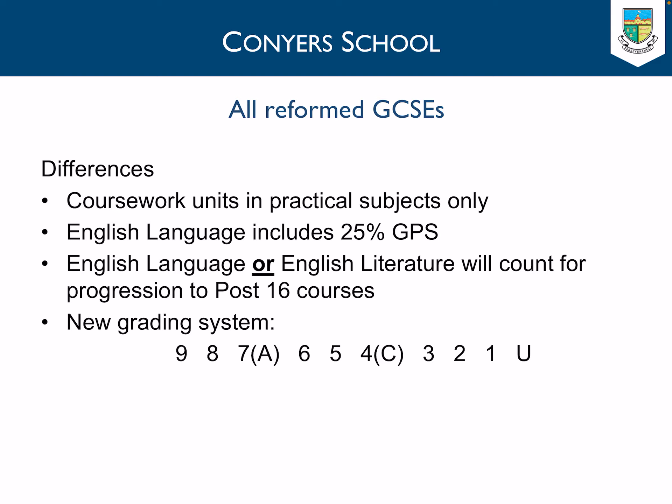English Language and English Literature will both count for progression to post-16 courses, whereas previously it was just English Language that counted. Most notably, there's a new grading system which uses numbers rather than letters. There is the addition of Grade 9, which is an A star star. A Grade 7 would be the equivalent of an A. A Grade 4 would be the equivalent of a C, a pass grade. And a Grade 5 would be a good, strong pass grade.